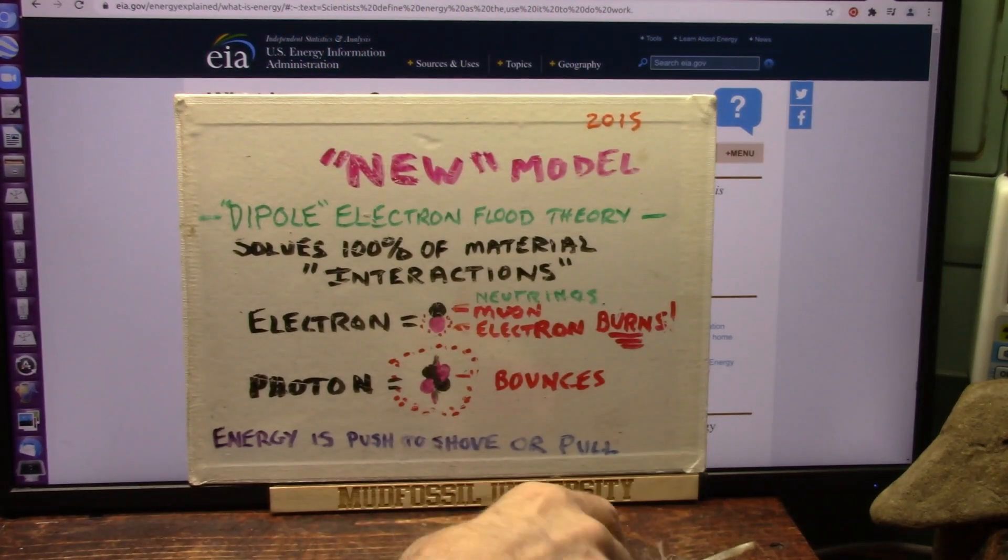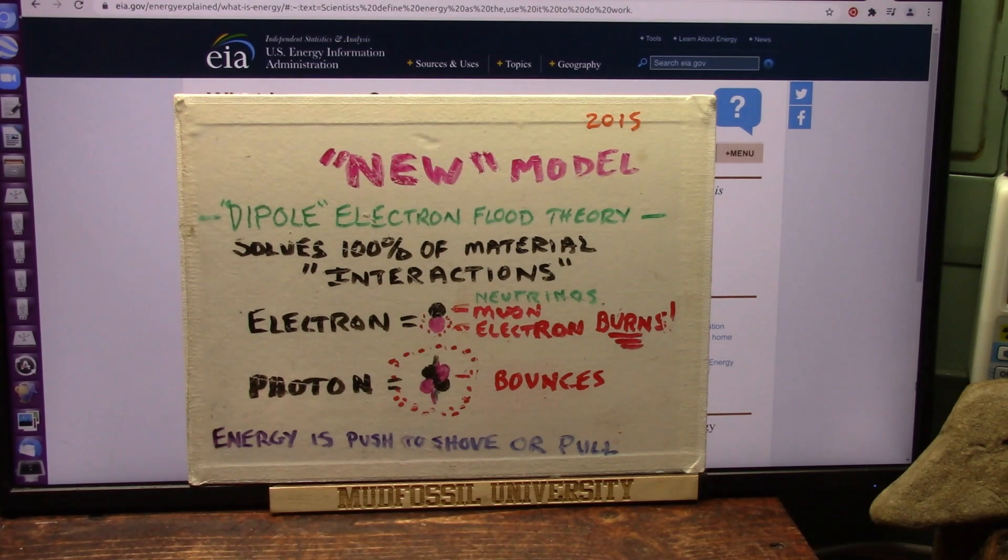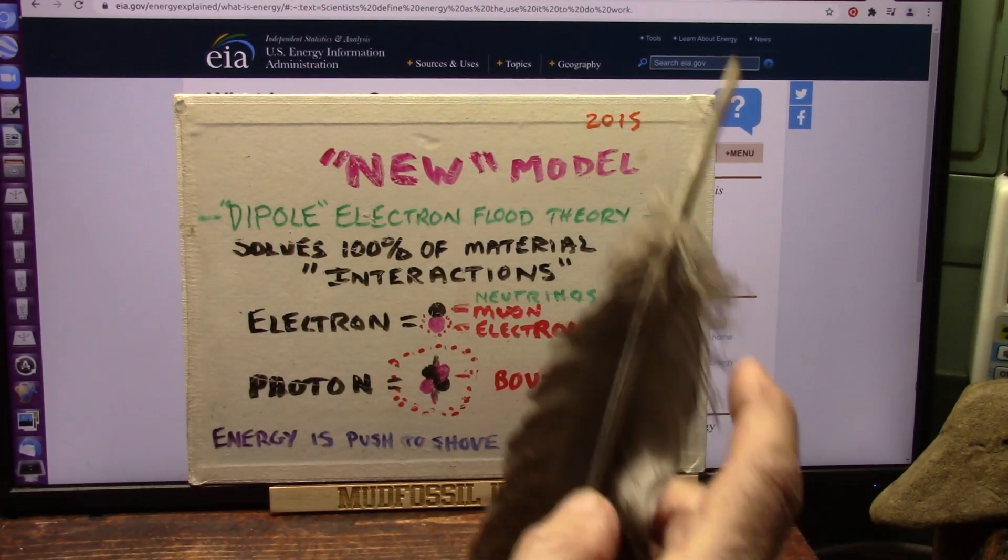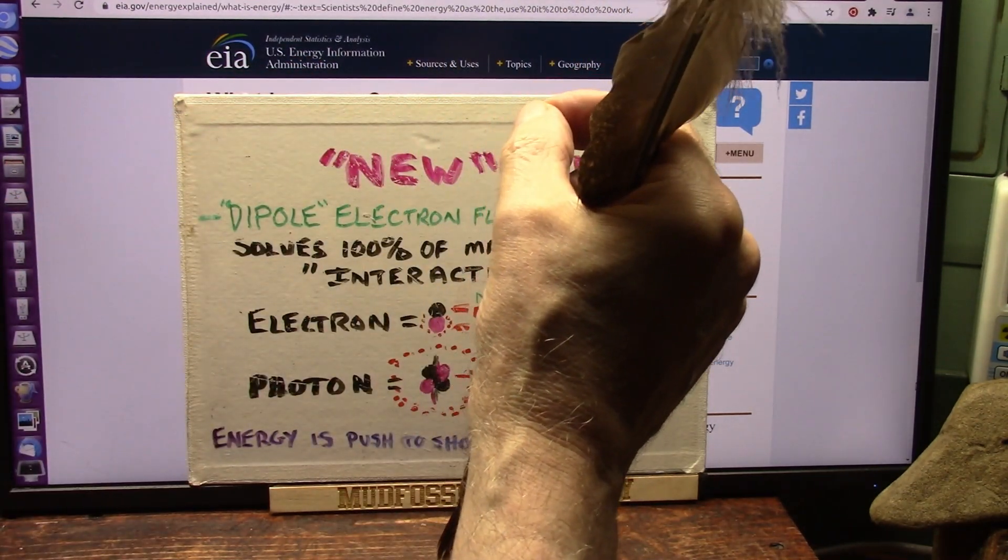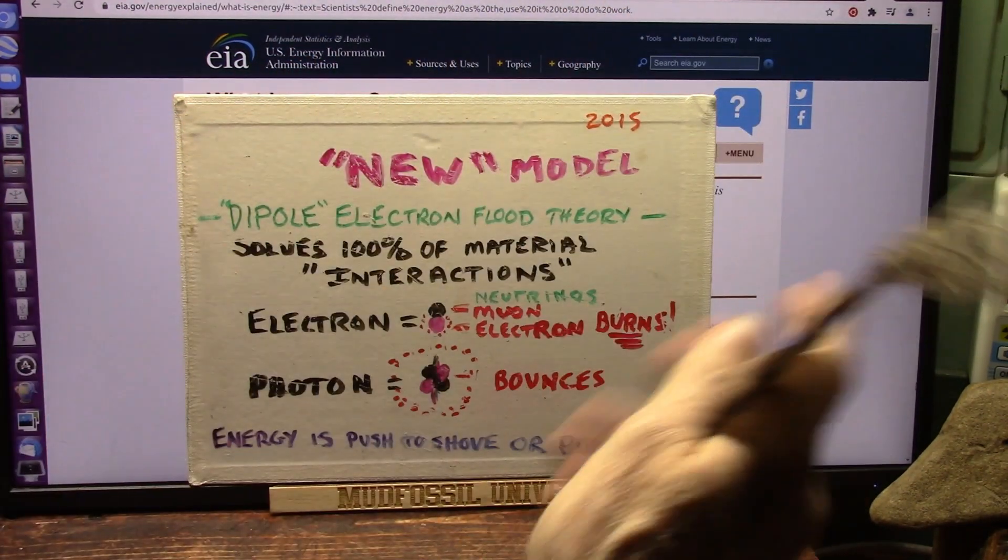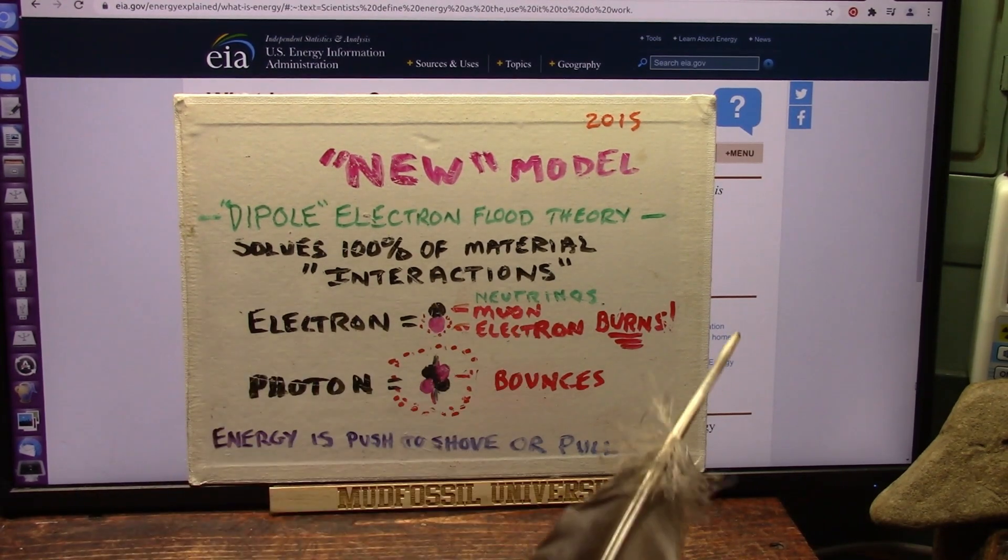And here it is, the new physics model. The standard model doesn't work, never worked. You can't have a big giant positive and little bitty tiny negative, and they just slam together. It's just totally nonsense.